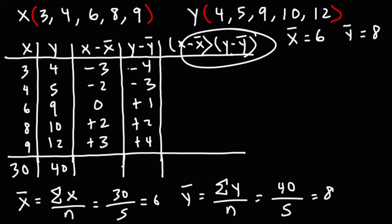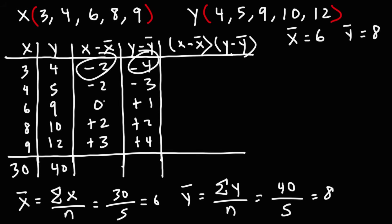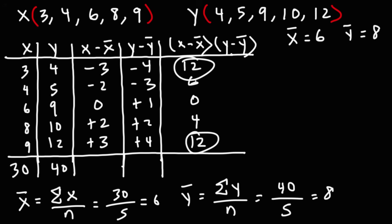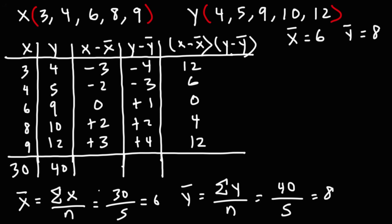Now we multiply x minus x-bar with y minus y-bar for each row: negative 3 times negative 4 is positive 12, negative 2 times negative 3 is 6, 0 times 1 is 0, 2 times 2 is 4, and 3 times 4 is 12. The sum of this column is 12 plus 12 equals 24, plus 6 plus 4 equals 10, giving a total of 34.